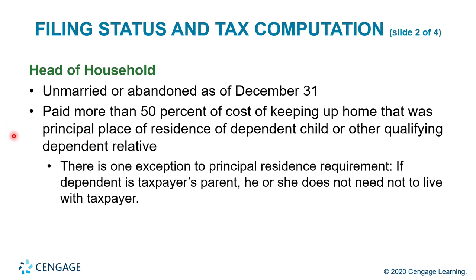The home must have been the principal place of residence of a dependent child or other qualifying dependent relative. There is one exception to the principal residency requirement: if the dependent is the taxpayer's parent, he or she does not need to live with the taxpayer. Head of household is a step up from single — or from married filing separately — with a higher standard deduction, but you have to meet the 50% support hurdle in order to qualify.